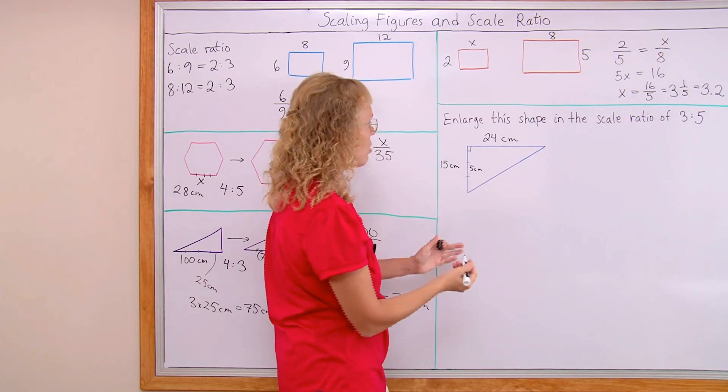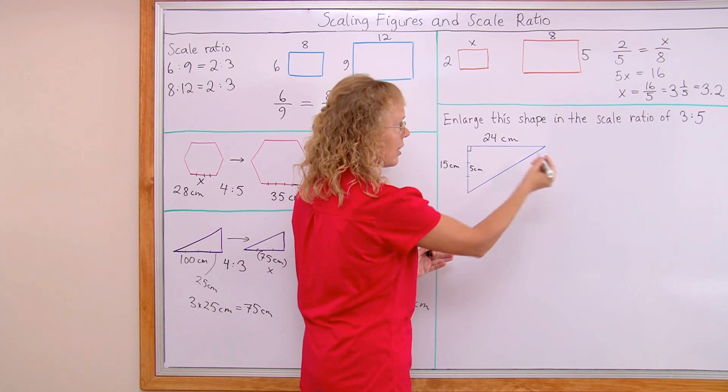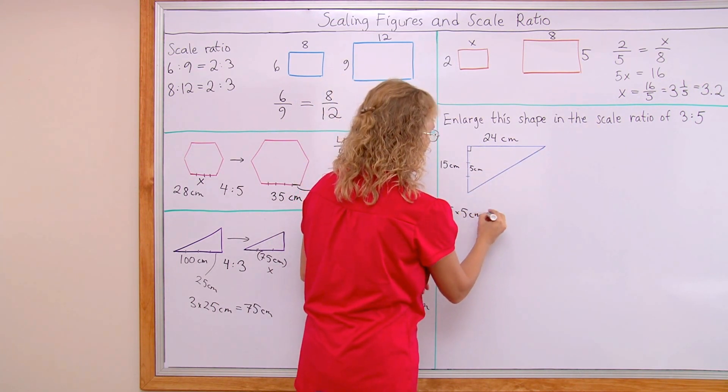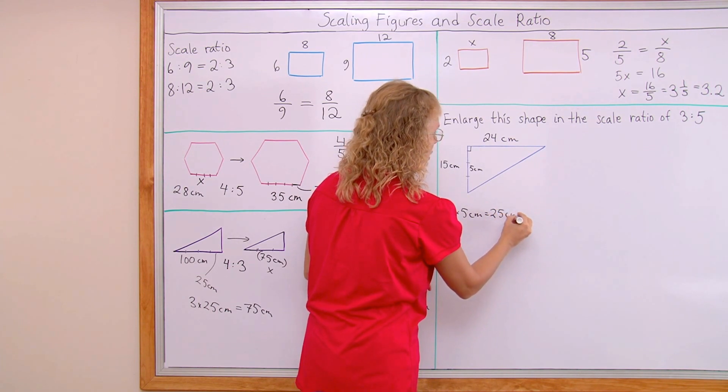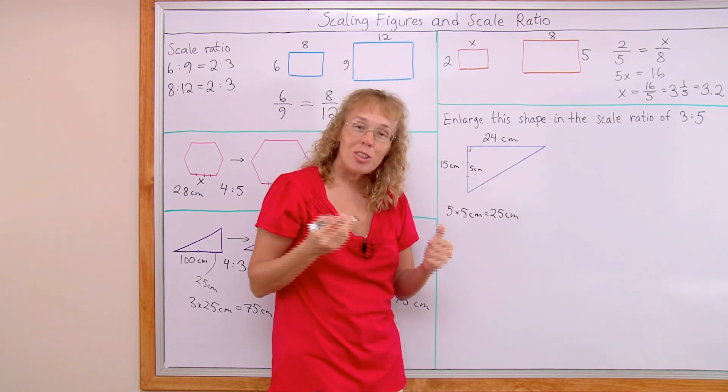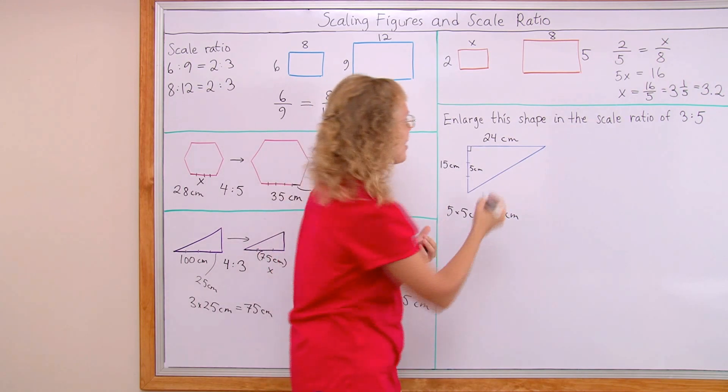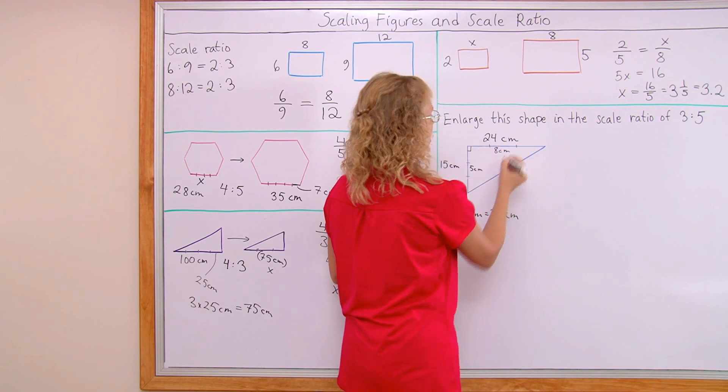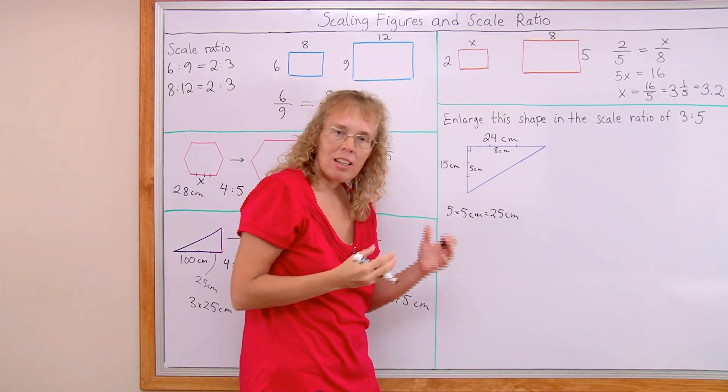Then in my enlarged triangle, I will have instead 5 such parts, 5 times 5 centimeters. So I need a 25 centimeter side, and then this one also, this other side, I also think of it as being in 3 parts. Of course, they are longer parts, 8 centimeters each one.